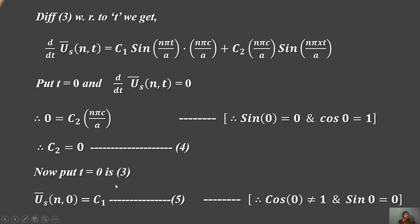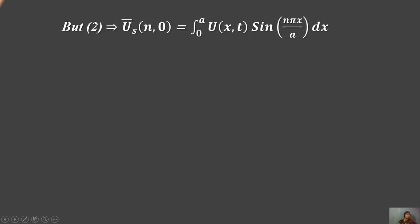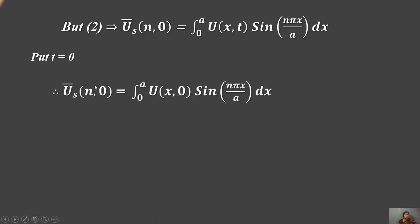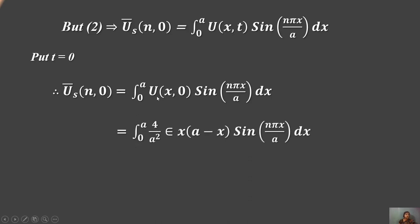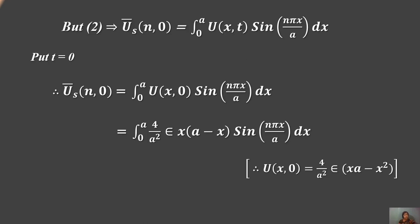Now putting t = 0 in Equation 3: Uˢ(n, 0) = C₁, since cos(0) = 1 and C₂ = 0. From the definition of the transform, Uˢ(n, 0) = ∫₀ᵃ u(x, 0)·sin(nπx/a) dx = ∫₀ᵃ (4ε/a²)·x(a−x)·sin(nπx/a) dx.